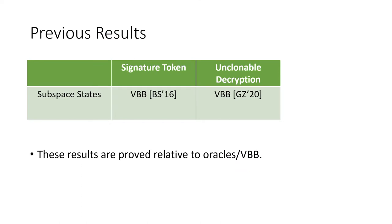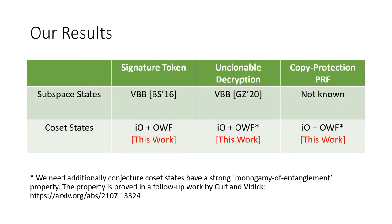We look at applications from subspace states. Previous results show that signature tokens and unclonable decryption exist relative to classical oracles. In other words, they need to assume post-quantum secure virtual black box (VBB) obfuscation for classical circuits. In this work, we show the generalized notion of coset states also gives these applications, but in the plain model, by assuming post-quantum indistinguishability obfuscation (IO) and one-way functions.